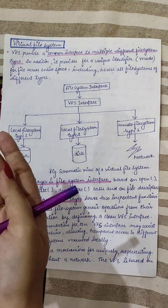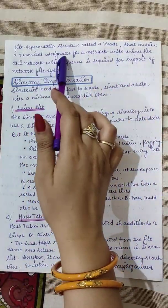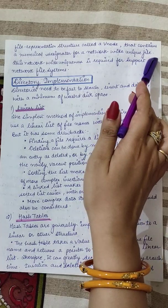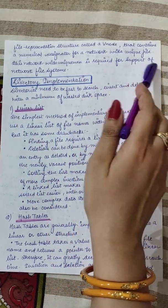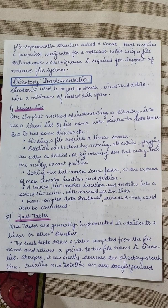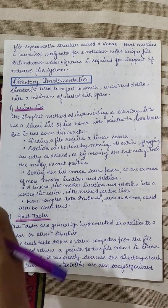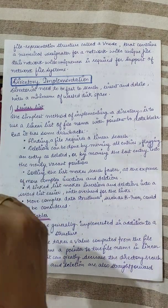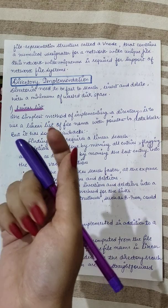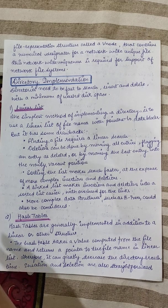The vnode contains a numerical designator for a network-wide unique file. This network-wide uniqueness is required for support of network file systems. When we talk about network file systems, we mean files that can be used in a client-server model — if you want to access a file stored on a remote machine, you need the virtual file interface to help download that file, using the concept of virtual file interface. This was about partitions and mounting followed by virtual file system. Next we will be discussing about directory implementation.